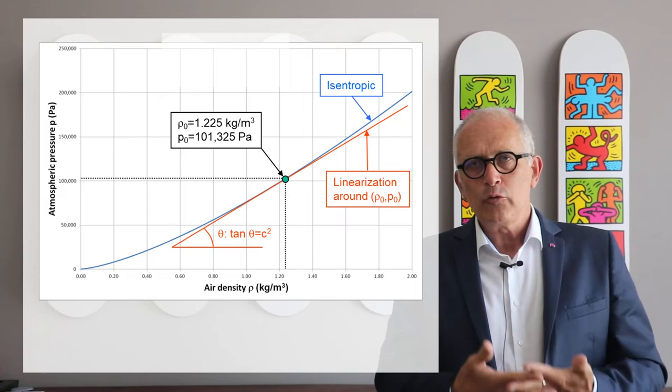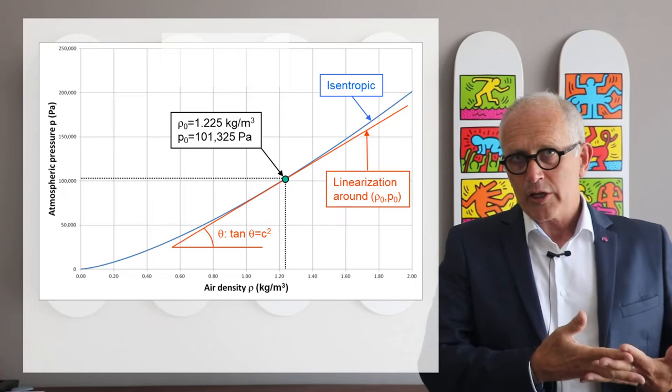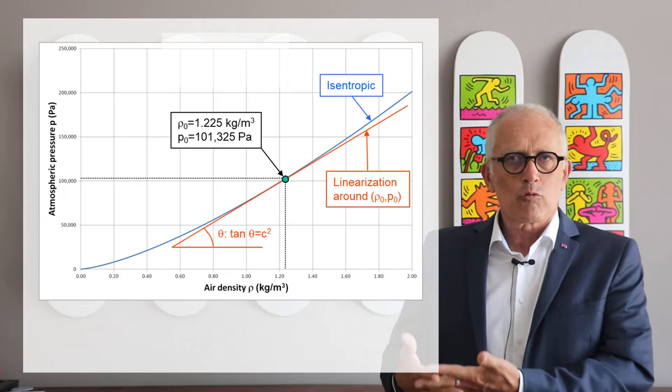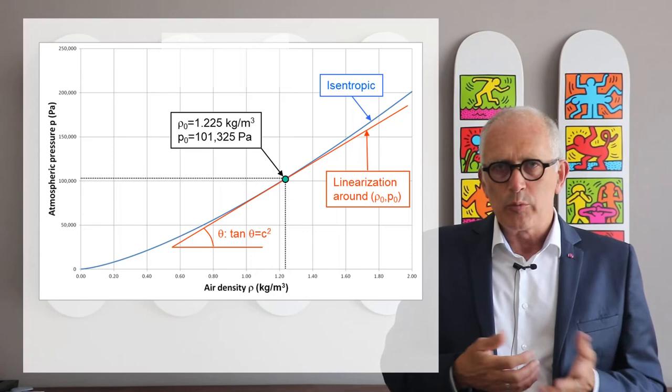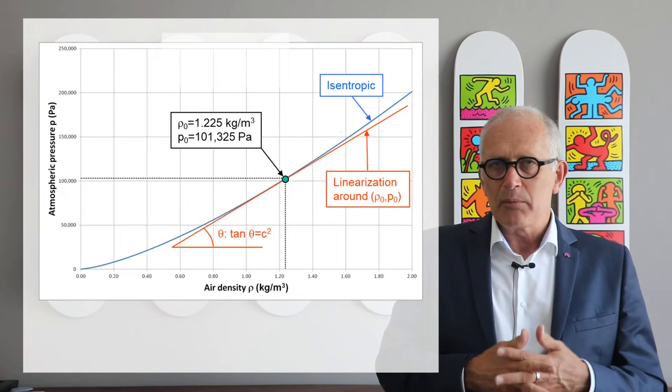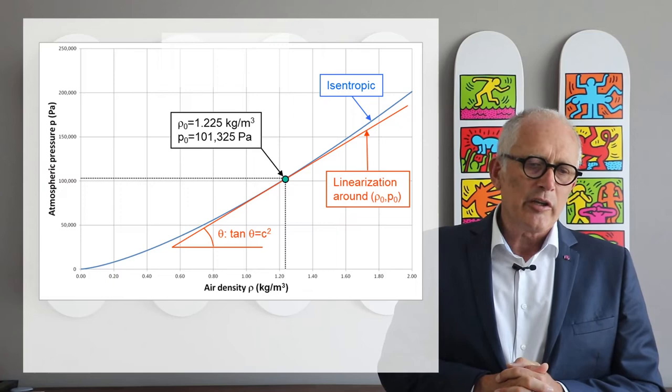We make the hypothesis again that the acoustic fluid is barotropic. Barotropic means that the pressure is directly related to density. P equals F(ρ). Pressure is a function of density. And depending on the fluid we are going to consider, we'll see that later for air, the relationship can be different. But it's always some kind of curve like the one you see here.